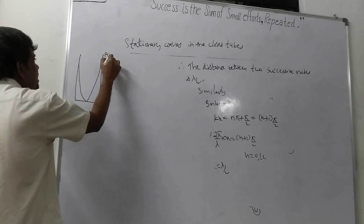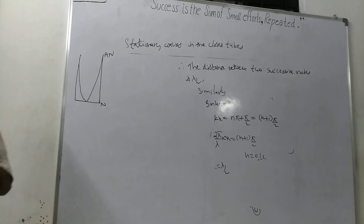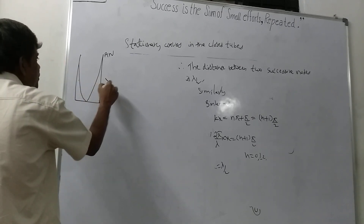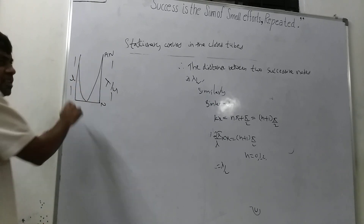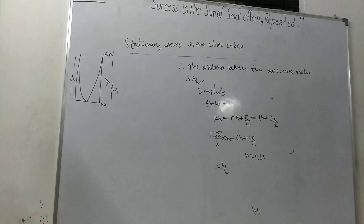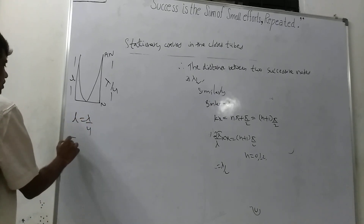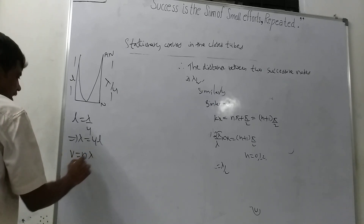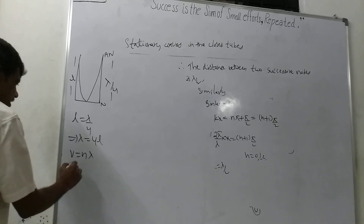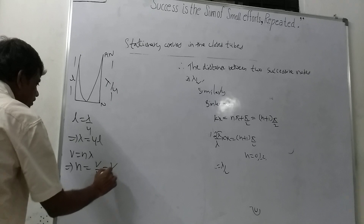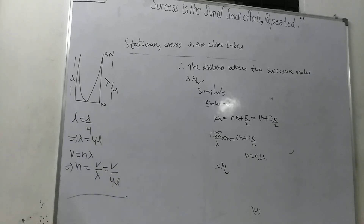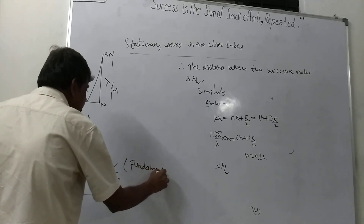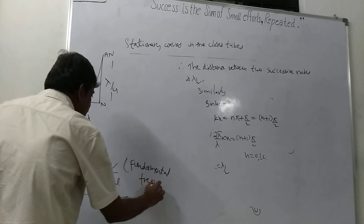The condition will be: one antinode and one node, and since node to antinode is lambda by 4, the length L of the air column equals lambda by 4. So lambda equals 4L. Using velocity of sound V equals n lambda, the fundamental frequency N1 equals V by lambda equals V by 4L. This is called the fundamental frequency, also called the first harmonic.